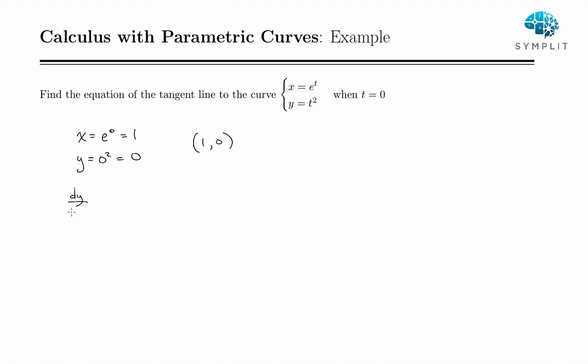Our slope for a tangent line, of course, is dy/dx, which for parametric equations is dy/dt over dx/dt. And so we take some derivatives. dy/dt is 2t, and dx/dt is e to the t.